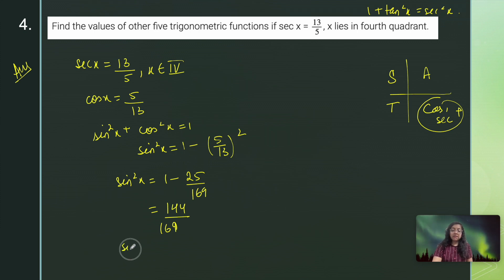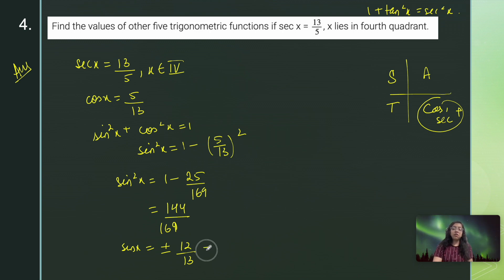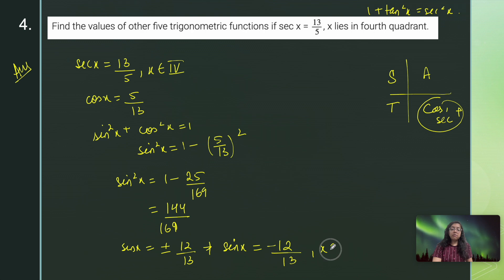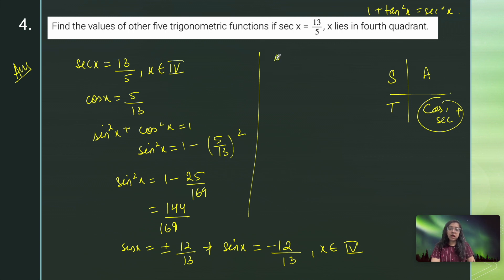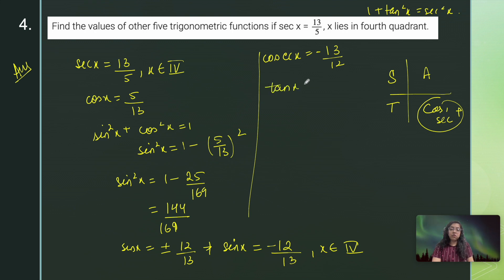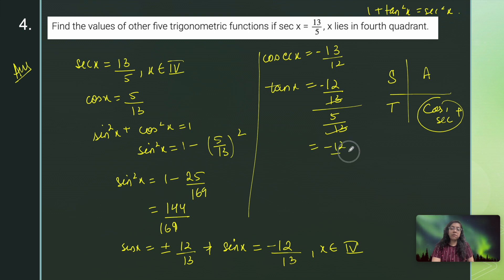From sin x = −12/13, I get cosec x = 1/sin x = −13/12. Then tan x = sin x / cos x = (−12/13) / (5/13) = −12/5. In the fourth quadrant tan is negative, which is consistent. And cot x = 1/tan x = −5/12.